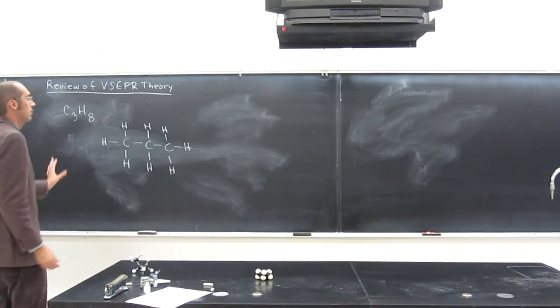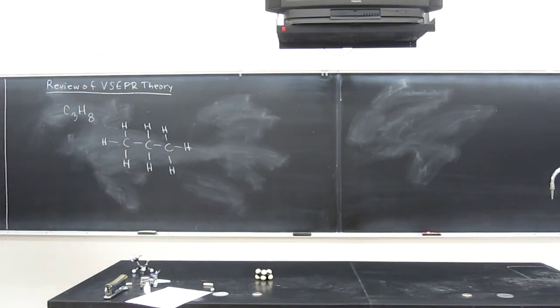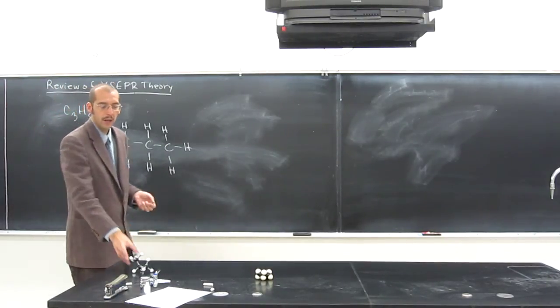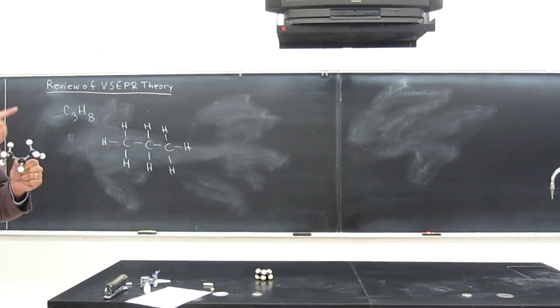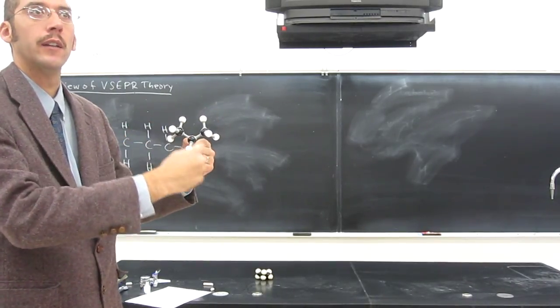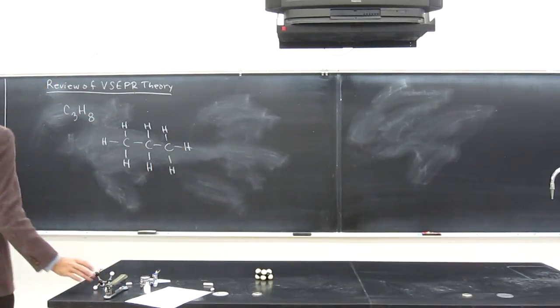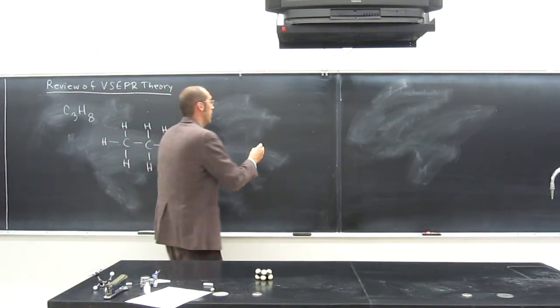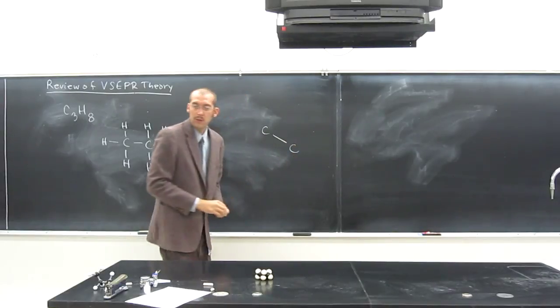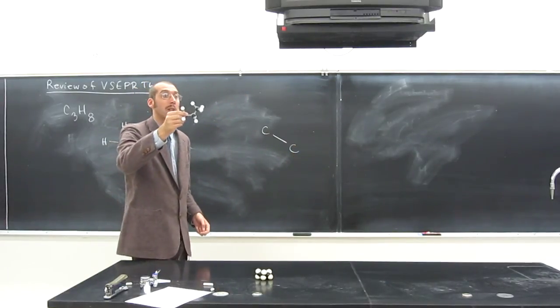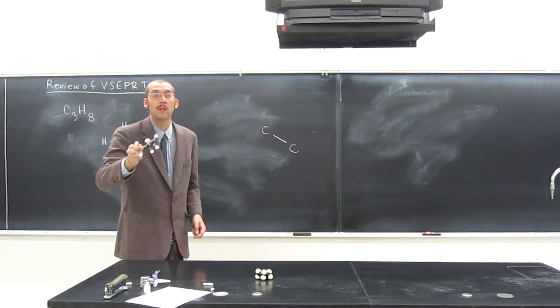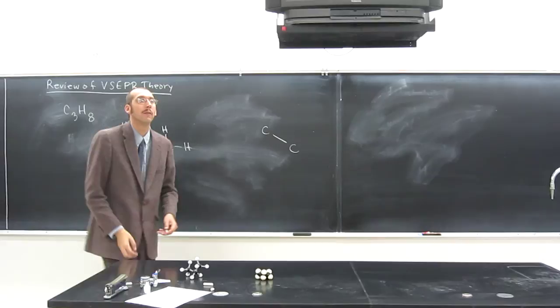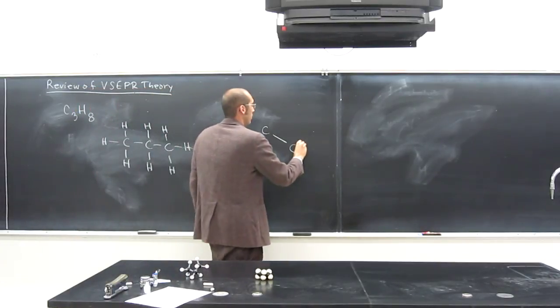So if we're looking at this thing here, this is like the Lewis structure of it, right? This doesn't show any bond angle information. So in order to draw the VSEPR theory structure or the molecular structure of this thing, we're going to have to remember our bond angles. If it helps you to build models, you're more than welcome to buy a model kit and bring it to your test if you want to.